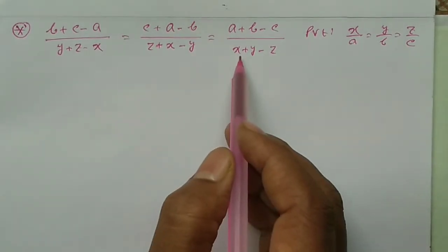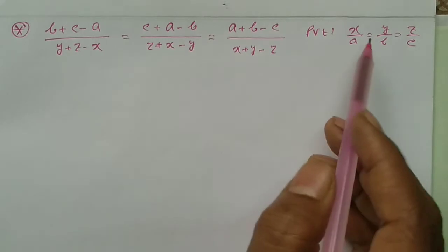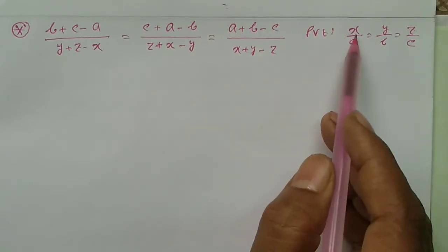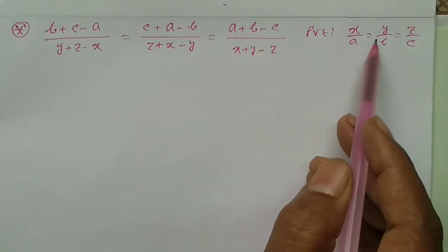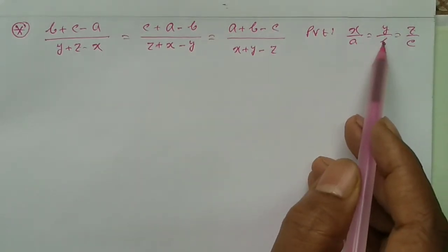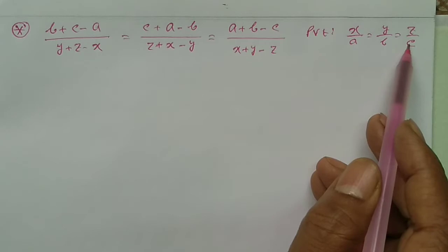The first thing that we have to prove is X by A equals Y by B equals Z by C.